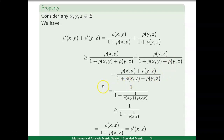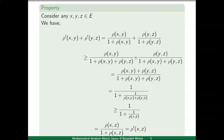Simplifying, we get this equals 1 upon 1 plus 1 upon rho xy plus rho yz. Since rho is a metric on E, rho xy plus rho yz is greater than or equal to rho xz. Therefore this term is greater than or equal to 1 upon 1 plus 1 upon rho xz. Simplifying, we obtain rho xz upon 1 plus rho xz, which by definition equals rho dash xz. So we have proved that rho dash xy plus rho dash yz is greater than or equal to rho dash xz whenever x, y, z are points in set E.